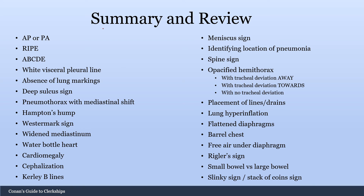Let's do a brief summary and review. When first interpreting a chest x-ray, determine if it's AP or PA. Then check RIPE — rotation, inspiration, position, and exposure — to assess the quality of the radiograph. ABCDE is what you use for a systematic approach: airway, bones, cardiac, diaphragm, and everything else.